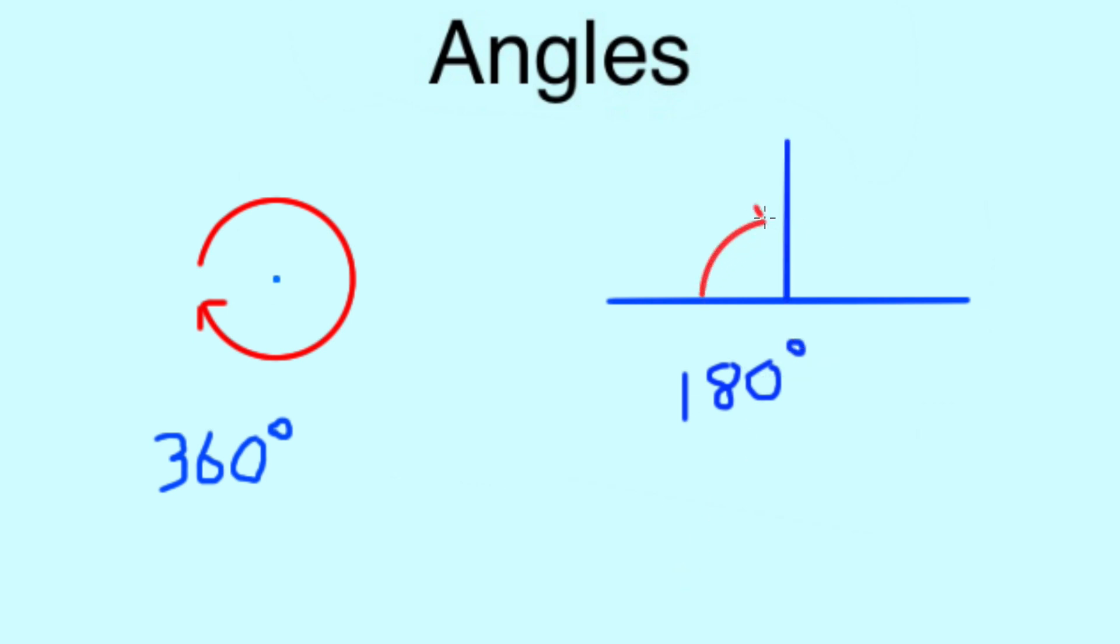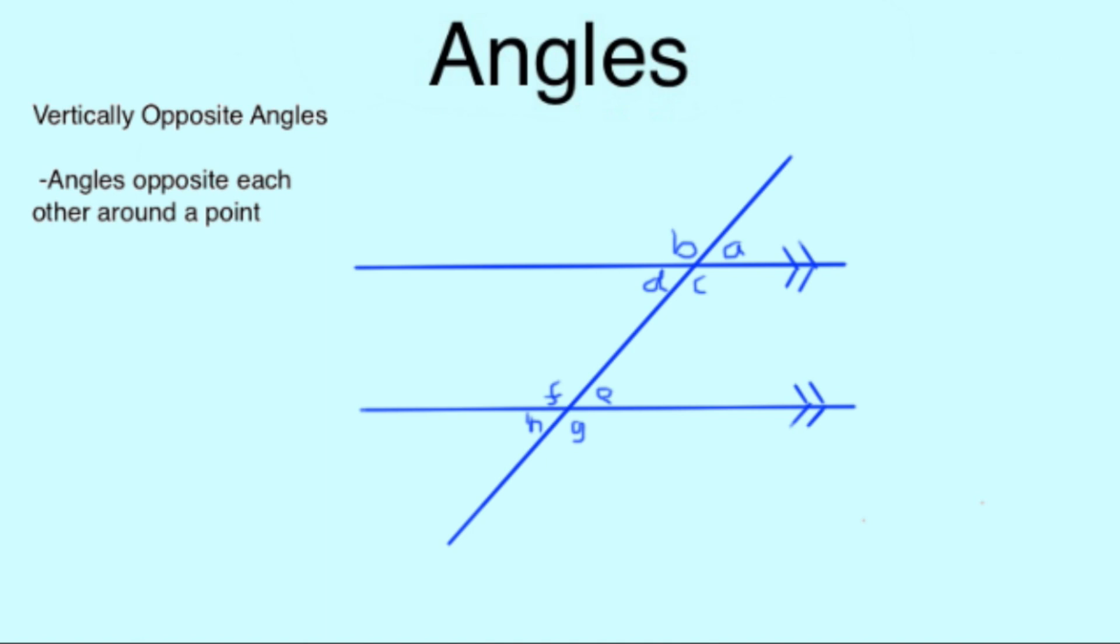A right angle is half of 180 again and a quarter of 360, which gives us 90 degrees. Now we move on to slightly more complex related angles.